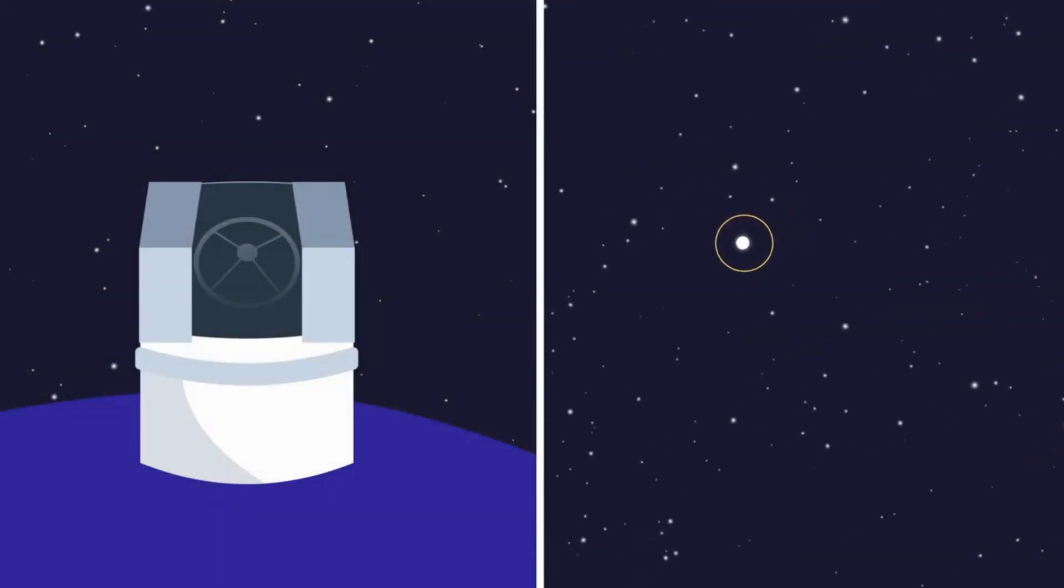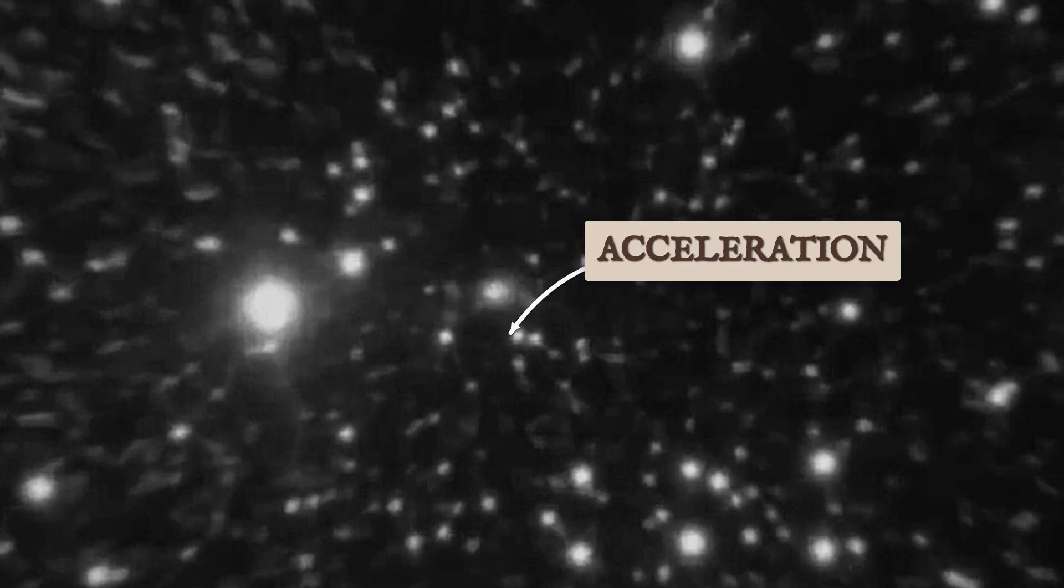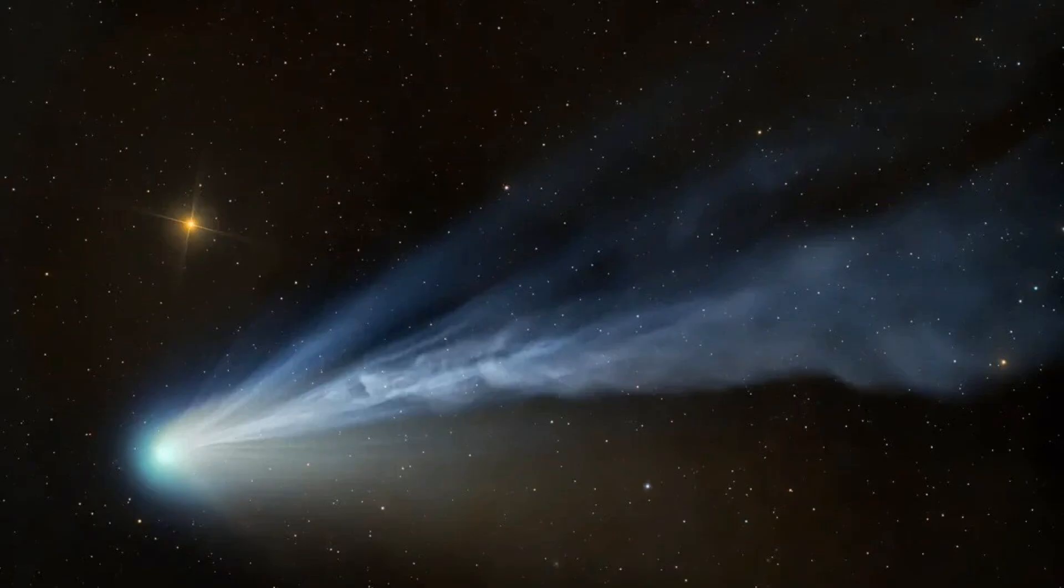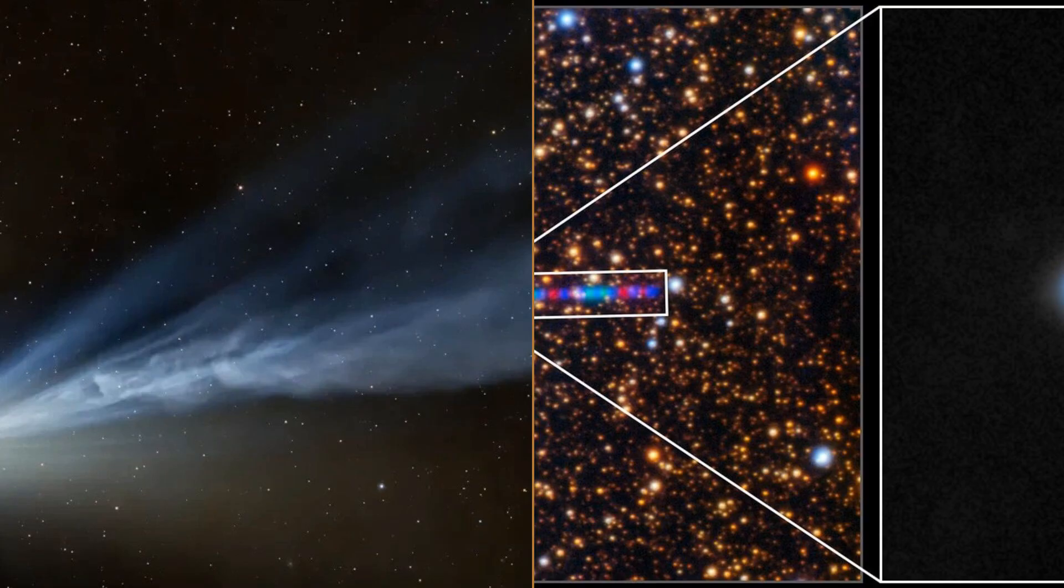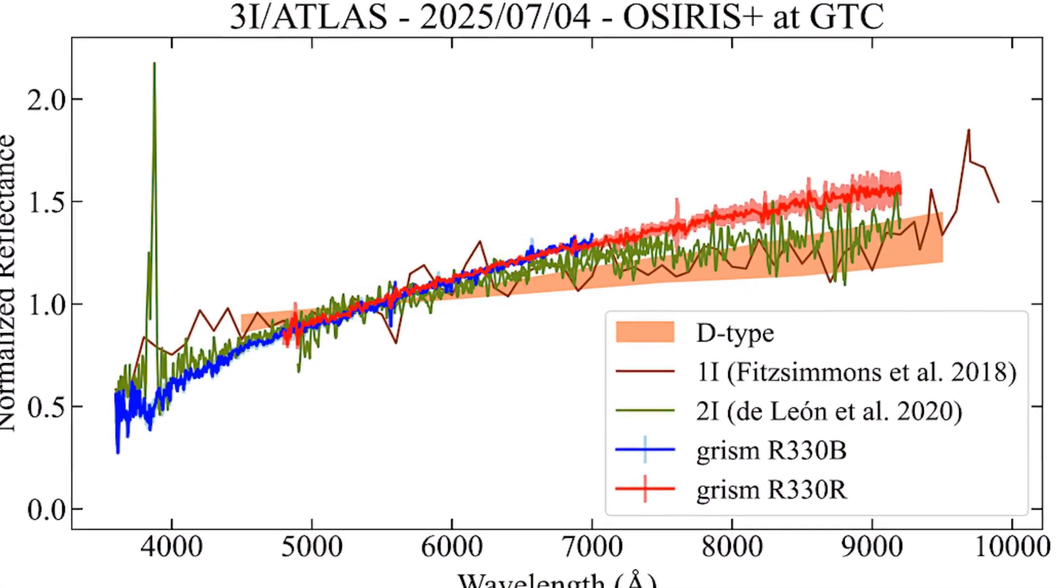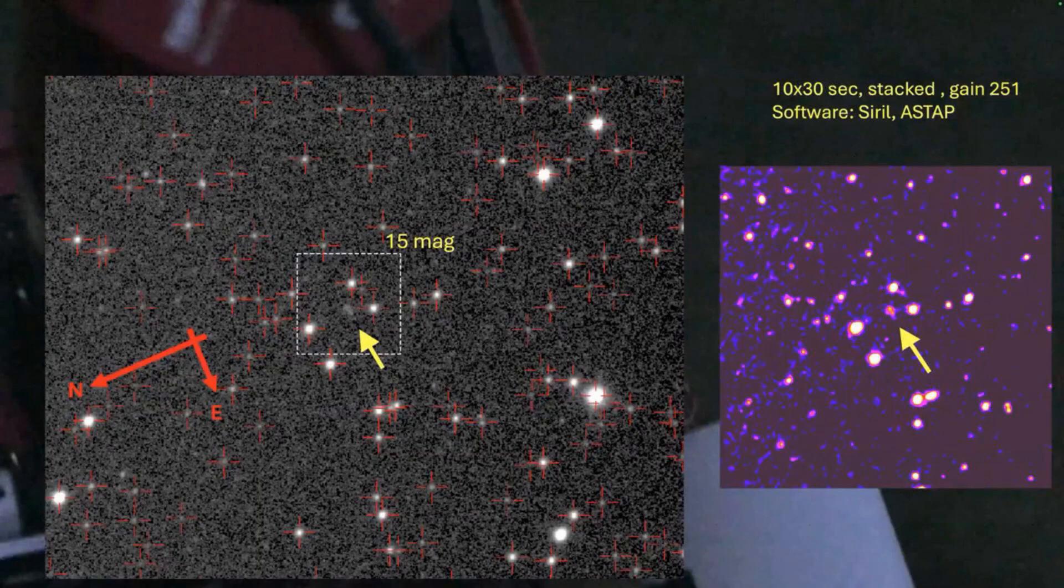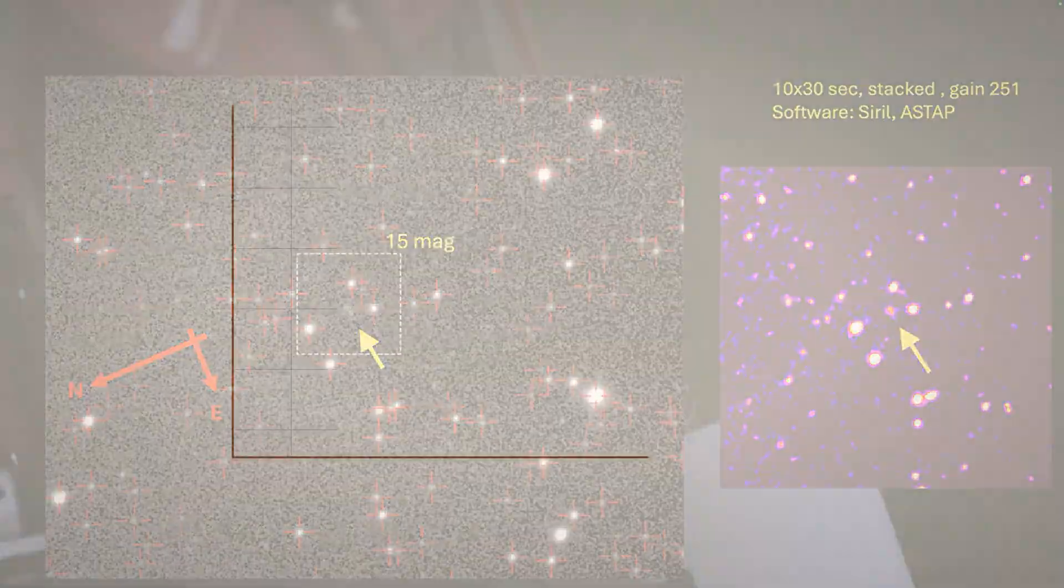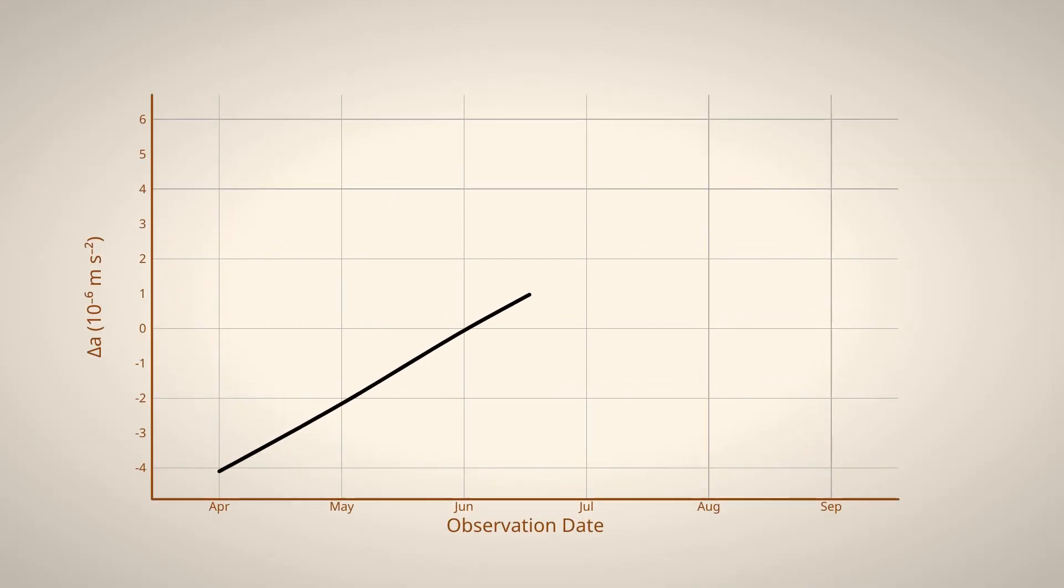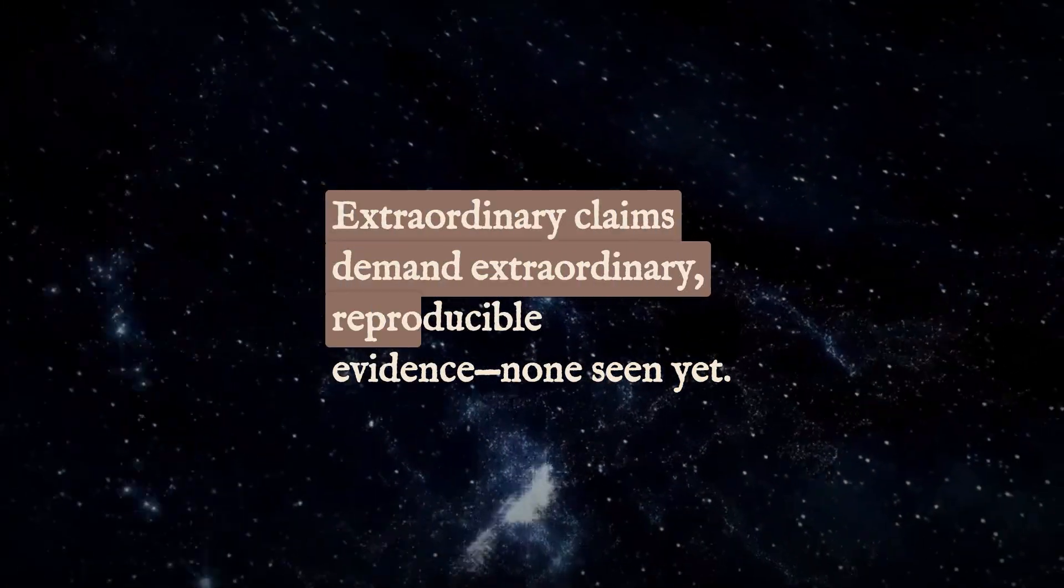Engineered propulsion, if it were present in 3I-Atlas, would leave behind a set of unmistakable clues. The most direct sign would be a narrow, collimated exhaust plume precisely aligned with the direction of the measured acceleration, something far more focused than the diffuse outflows seen from natural comets. Spectral analysis would need to reveal chemical or isotopic signatures that do not match any known cometary material, such as unexpected molecular lines or ratios pointing to non-natural origins. In addition, a true engine would likely produce thermal infrared excess inconsistent with solar heating or show abrupt changes in acceleration, on-off cycles or shifts tied to the object's orientation, none of which have been observed so far.